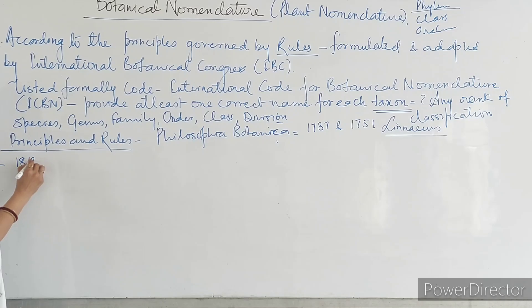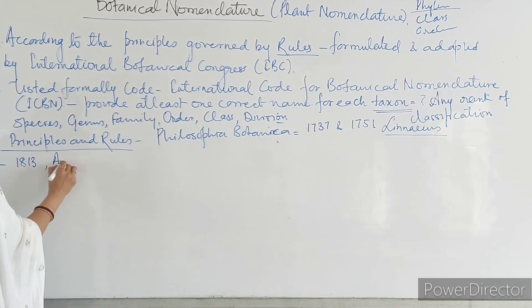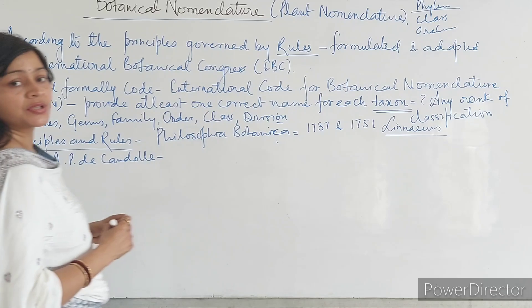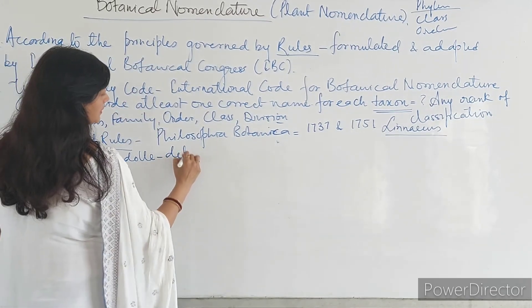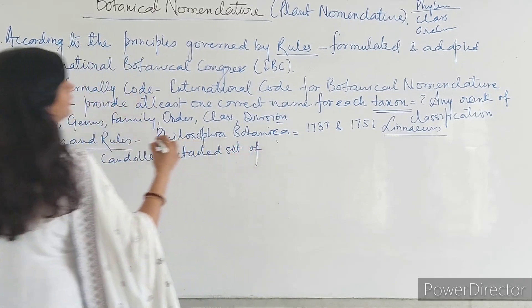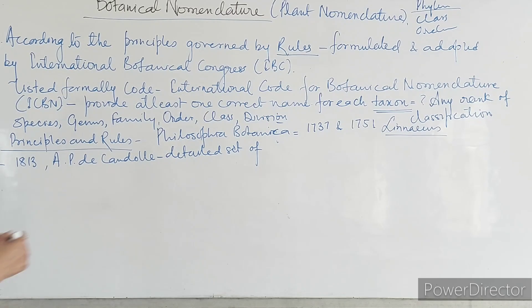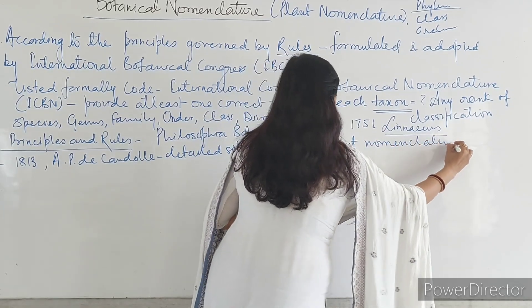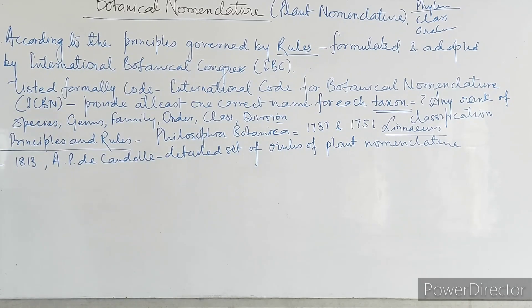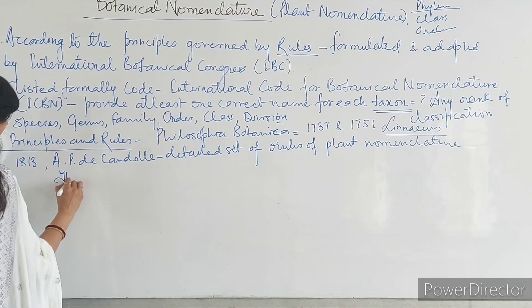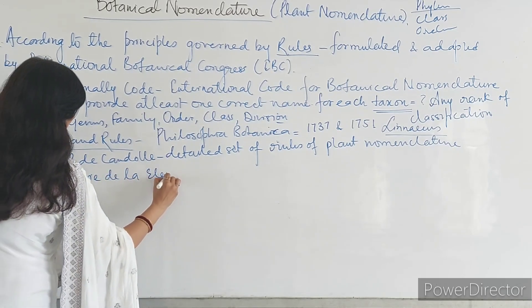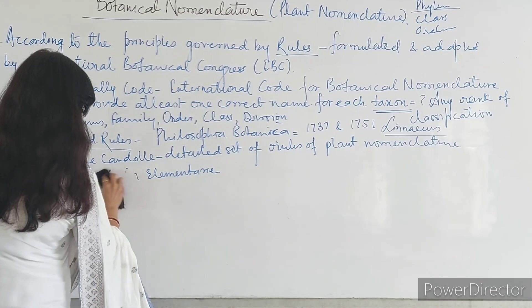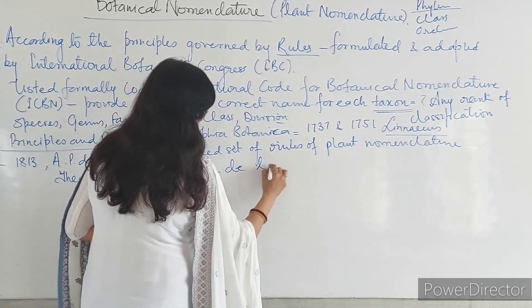After him, in the year 1830, A.P. de Candolle set forth a detailed set of rules of plant nomenclature in his book Théorie Élémentaire de la Botanique.